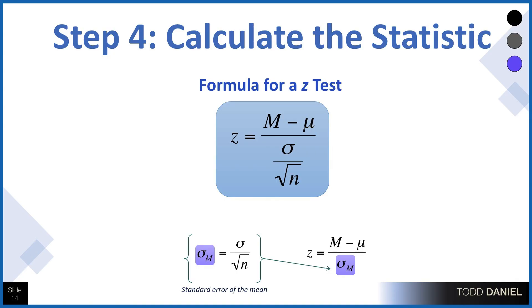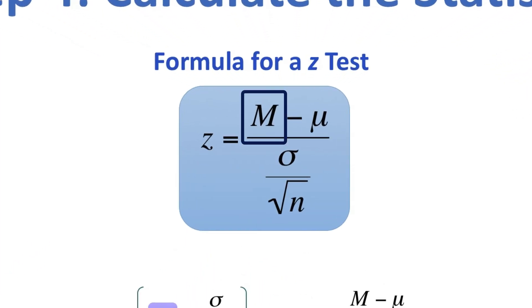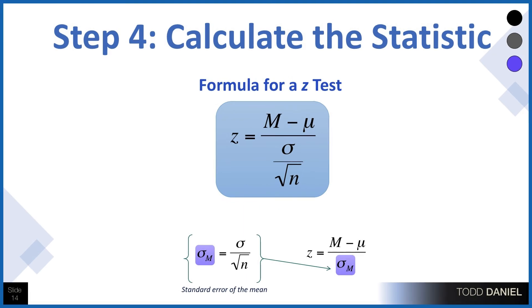Let me show you the formula that we would be using before I show you how we will actually do this. This is a formula for a z-test, and you can see where all of the pieces get plugged in. We have the mean of the sample, the mean of the population. Both of those go in the numerator. In the denominator, we have the standard deviation of the population divided by the square root of the sample size. That denominator, the σ divided by the square root of n, is also called the standard error of the mean. And this is our denominator, our error term for a z-test.